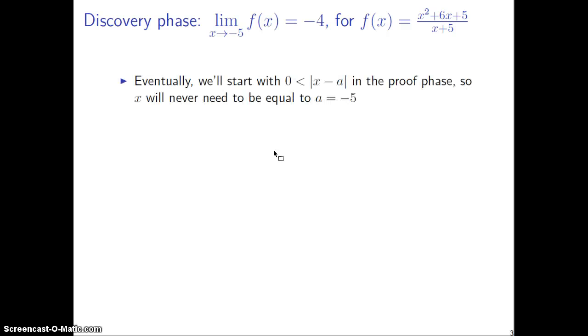So here's the discovery phase. So eventually, we are going to use this part of the fact in the proof phase, namely that this thing here says that x and a are different numbers. So x will never need to be equal to the number negative 5. And we're going to end up using that.